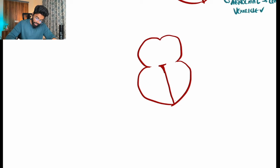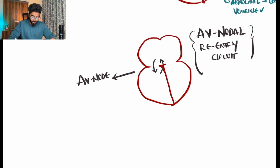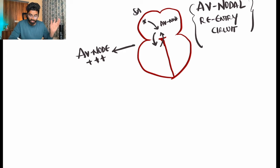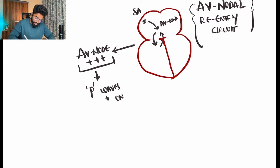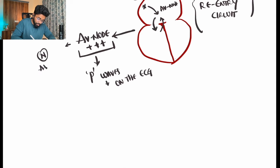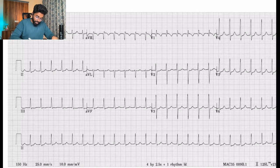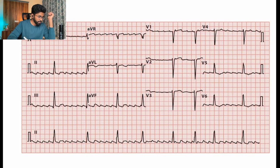In AVNRT, a re-entry circuit forms around the AV node, constantly activating it before it can sense the atrial impulse. The AV node fails to recognize conduction coming from the atrium, so the P wave is not recorded on the ECG. Since only the natural AV node is being activated, the rhythm remains regular — giving tachycardia with regular rhythm and absent P wave. This is the basic difference between AVNRT and atrial fibrillation.